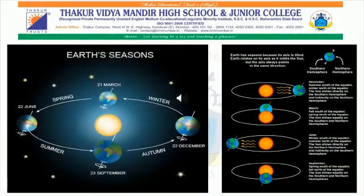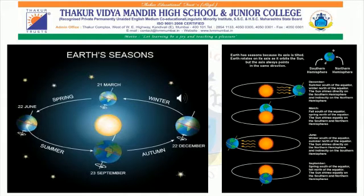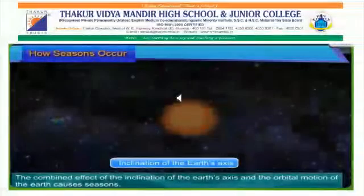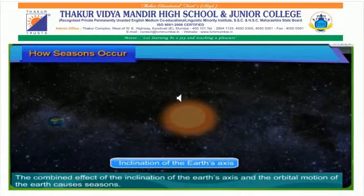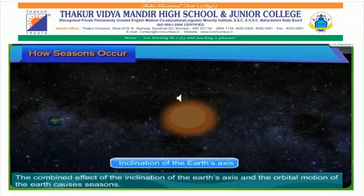As we have seen, the three major causes for seasons on the Earth are: the tilted axis of the Earth, rotation of the Earth, and revolution of the Earth around the Sun. The combined effect of inclination of the Earth's axis and the orbital motion of the Earth causes seasons.